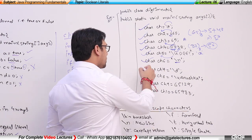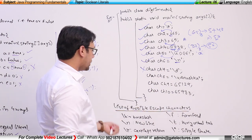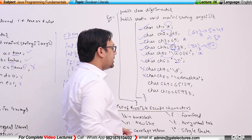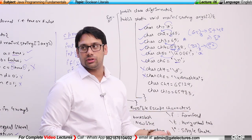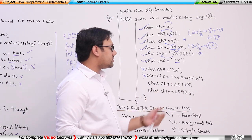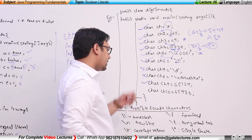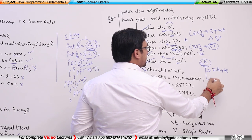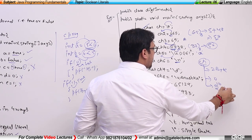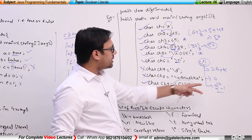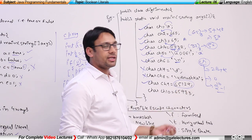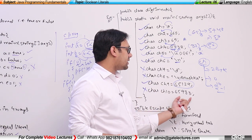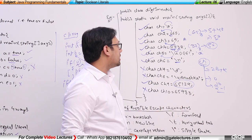If I take char ch7 is equal to \d, this is not correct because \d is not a valid escape character. Similarly, char ch8 is equal to \uanushka is not a valid representation because it is not a valid Unicode string. Char ch9 is equal to 65129 is valid because characters are 2 bytes, storing values from 0 to 2 raised to power 16 minus 1. Any decimal number within that range is valid. A number outside that range is not a valid representation.